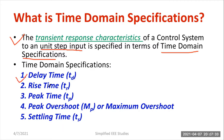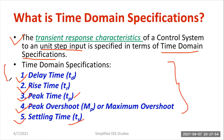The five time domain specifications are: number one, delay time — represented by the letter Td; next, rise time — represented by Tr; peak time — denoted by the letter Tp; peak overshoot or maximum overshoot — represented by the letter Mp; and finally, settling time — denoted by the letter Ts. With the help of these terminologies, you can find out the solution for the previous questions.